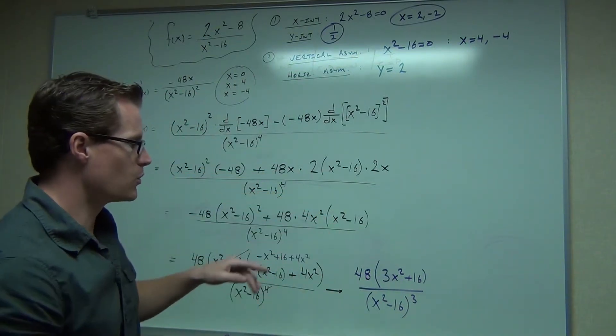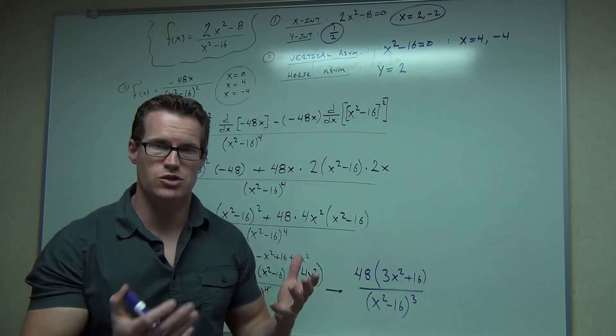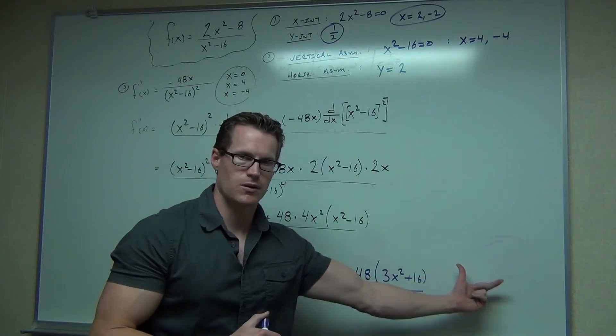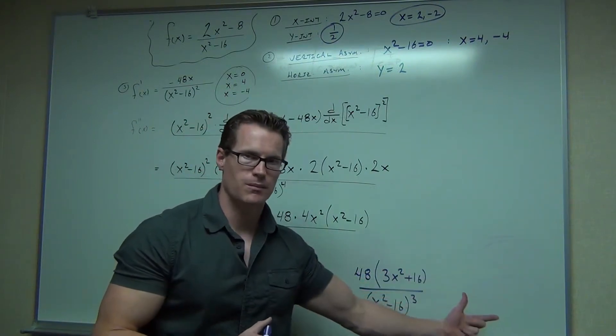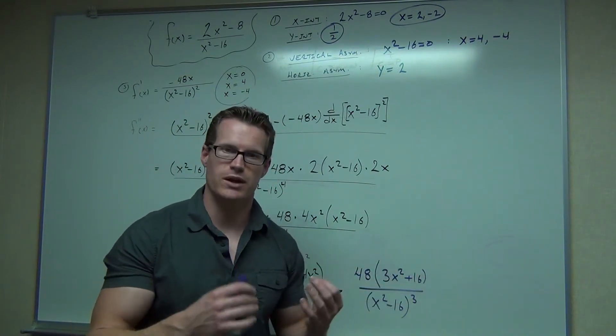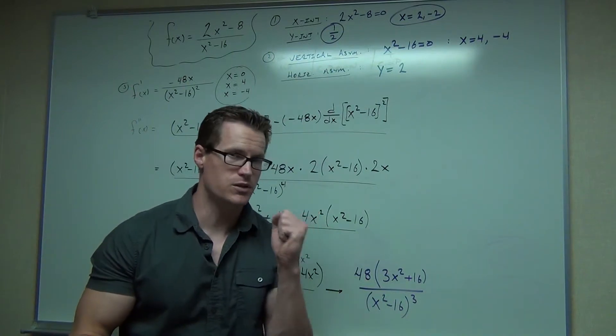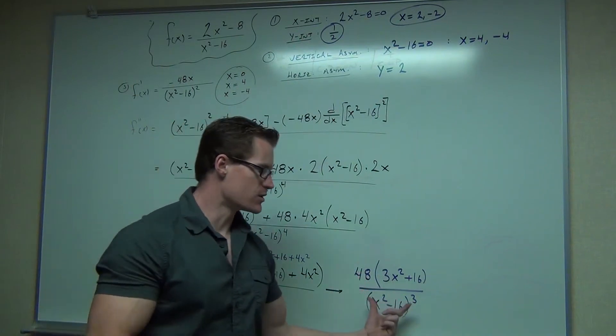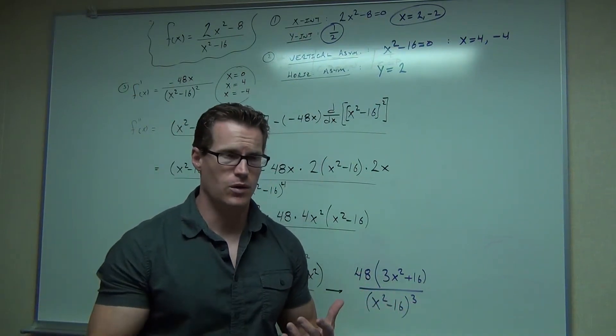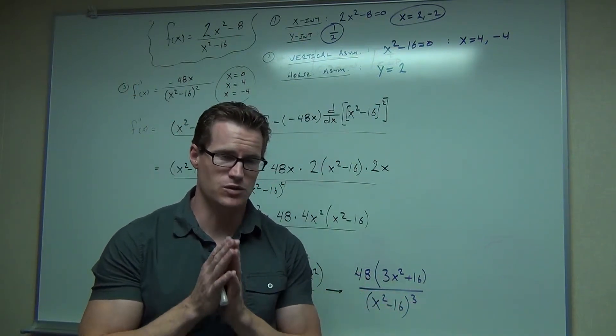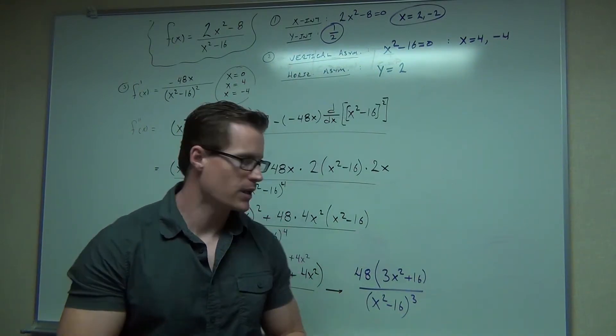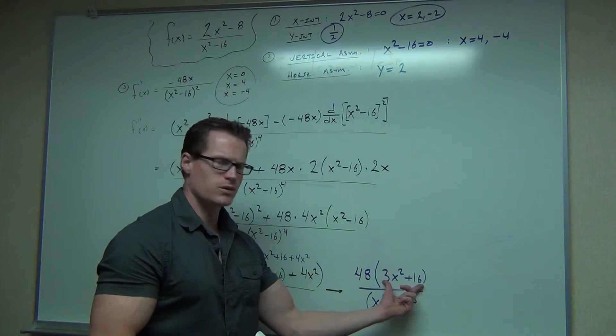So what this says is to find those points where you change, where you possibly can change concavity, set your numerator equal to zero and your denominator equal to zero. The numerator gives you the possible inflection points, like the actual numbers, the values, where you can plug them into the actual function and get a point. The denominator says where the second derivative is undefined. Well, it could still change concavity at those places, but you probably won't find a point because it's most likely an asymptote. So here, if you try this, well, notice that. 3x squared plus 16.